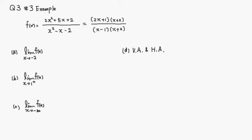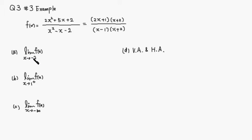Let's look at an example similar to quiz 3, number 3. So you have a rational function given: f of x equals 2x squared plus 5x plus 2 over x squared minus x minus 2. We want to take the limit. So first, let's look at the limit of f of x as x approaches negative 2.